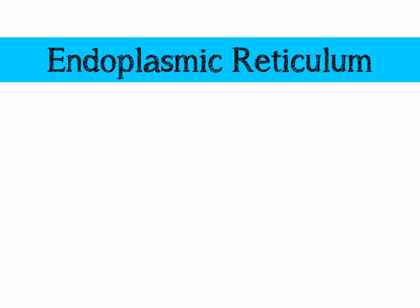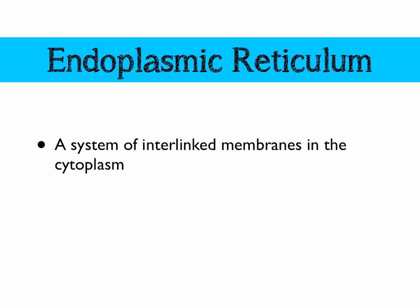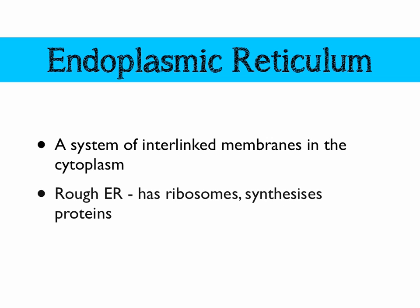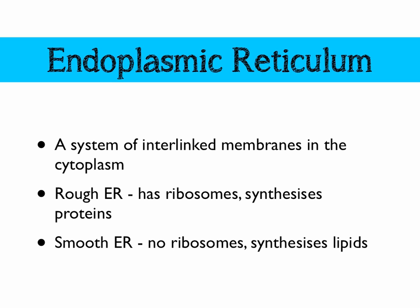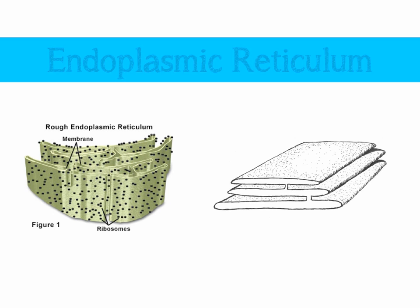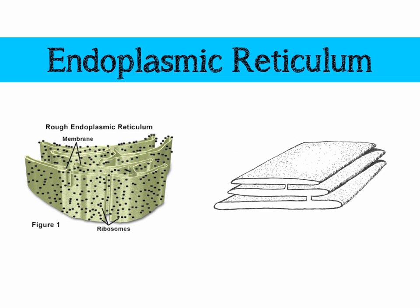Next we have the endoplasmic reticulum — a series of interlinked membranes in the cytoplasm. There are two different kinds. The rough endoplasmic reticulum has ribosomes on the surface, giving it that rough appearance under an electron microscope, and is responsible for the synthesis of more complex proteins. The smooth endoplasmic reticulum has no ribosomes and is responsible for synthesising lipids. On the left we have the rough endoplasmic reticulum with ribosomes bound to the surface, and on the right a drawing of the smooth endoplasmic reticulum.